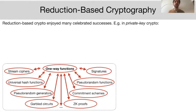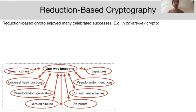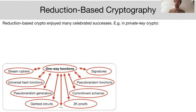In the past few decades, reduction-based cryptography has enjoyed a tremendous amount of successes. In the area of private key cryptography, the most fundamental assumption is that there are one-way functions — functions that can be evaluated in polynomial time in the forward direction but cannot be inverted in polynomial time by any polynomial-time adversary.